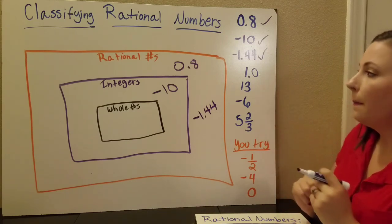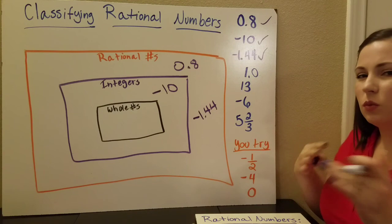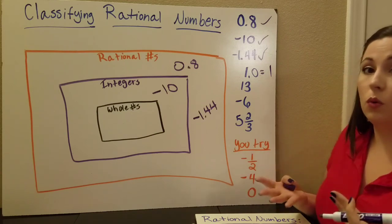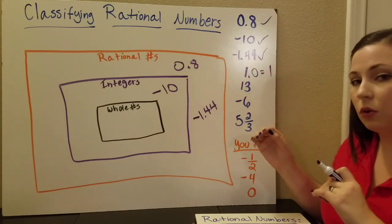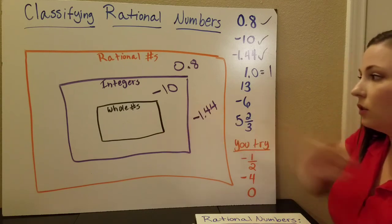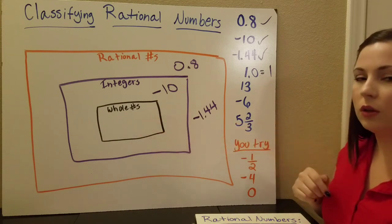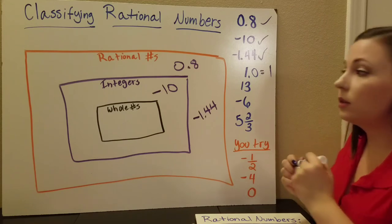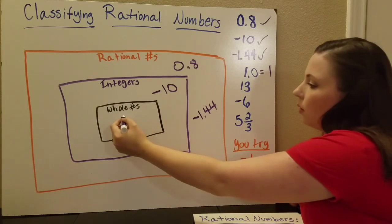Next one: 1.0. I see a decimal, but what's after it? A zero. So do we even have to write it as 1.0? No — we can write it simply as 1. Now where does 1 go? Is 1 a rational number? Yes. But is that the most specific group? No. Is 1 an integer? Yes. But is integers the most specific group for 1? No — because 1 is a whole number. Zero, one, two, three, and so on. The smallest group that 1 fits in is the whole numbers.